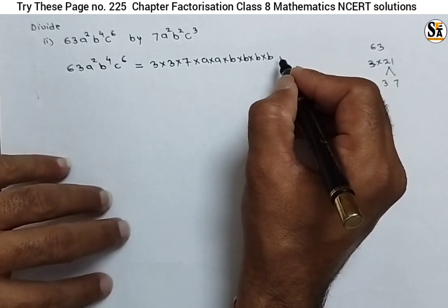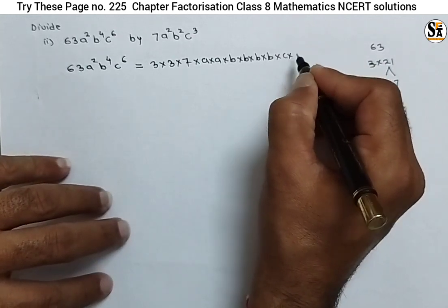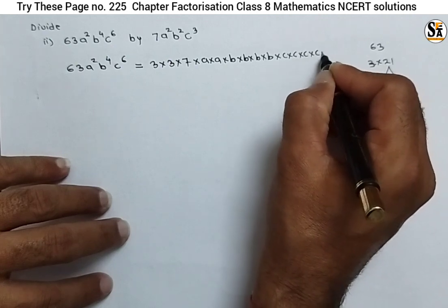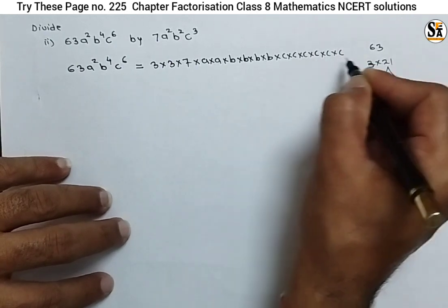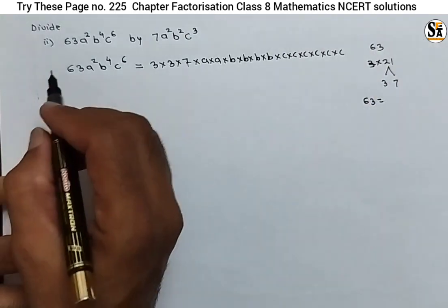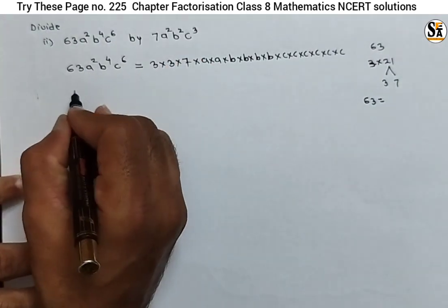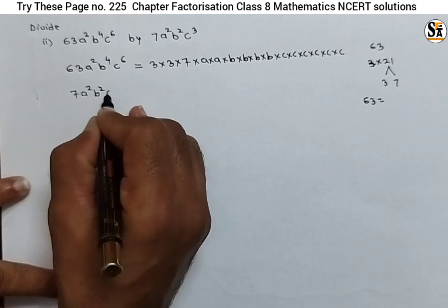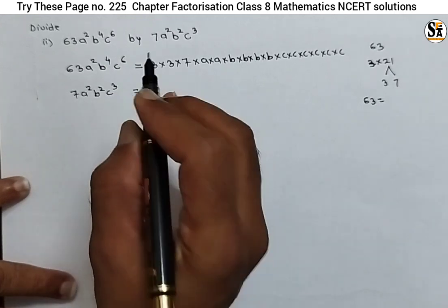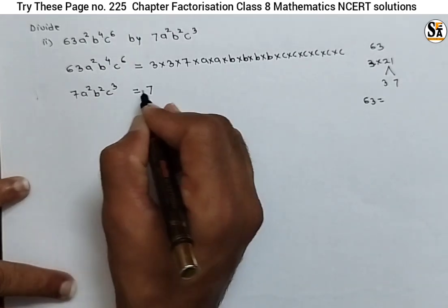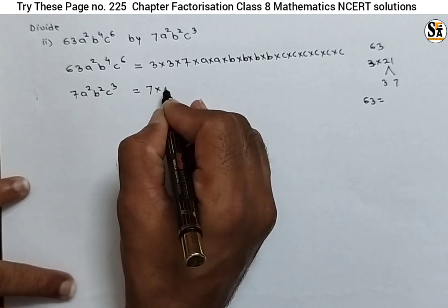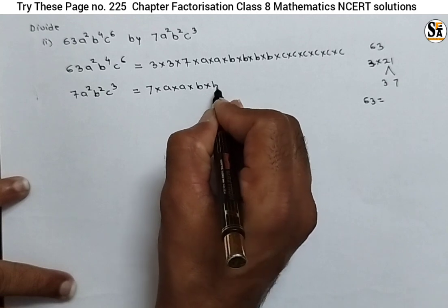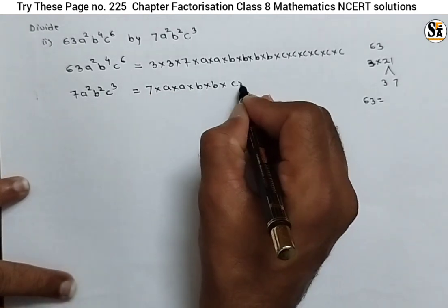And c⁶ means multiply c six times — c×c×c×c×c×c, that is 6 times c. Now the factors of the denominator expression: 7 remains as 7, a² means a×a, b² means b×b, and c³ means c×c×c.